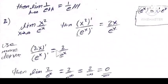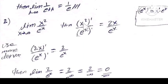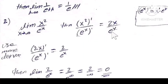The second example: the limit of x² over eˣ. Then the derivative of the numerator x² equals 2x. The derivative of the denominator eˣ is eˣ itself.